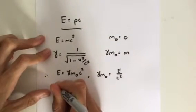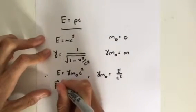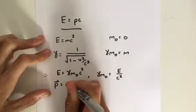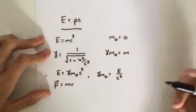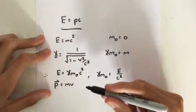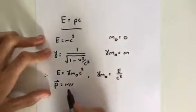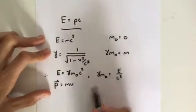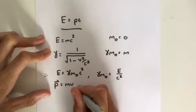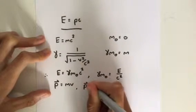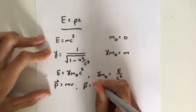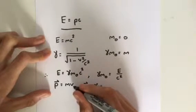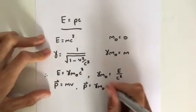We know that the momentum in classical physics is equal to Mv. But this is relativity. This is not going to work. So again, we can substitute gamma M0 for mass. So you get that momentum is equal to gamma M0 times V. Well, V is just the speed of light.